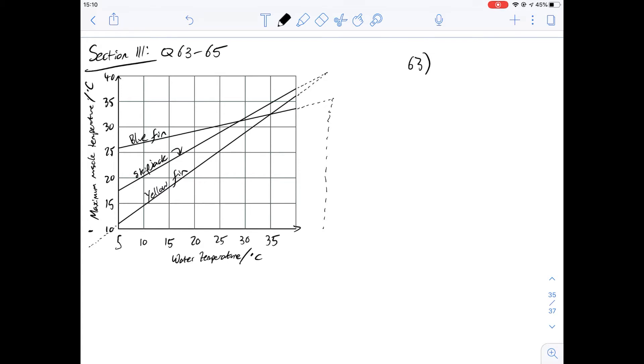And then skipjack at a water temperature of 40 would have a higher temperature, which is closer to 40. And as you can see here, it would be pretty much at 40. So the difference between the water temperature and the maximum muscle temperature will be the smallest for this one. And so the answer for this one is going to be D.